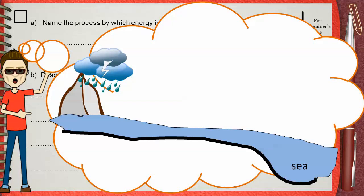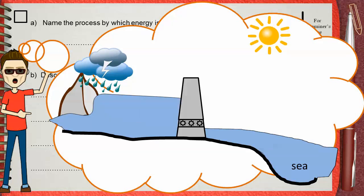When a dam is built in the pathway of the river, the water behind the dam becomes higher than water after the dam. Here comes the role of the Sun.